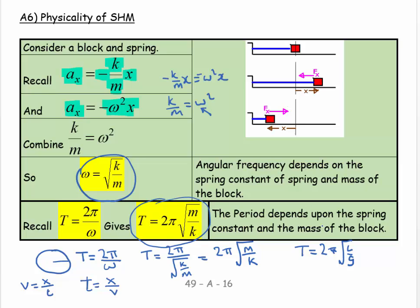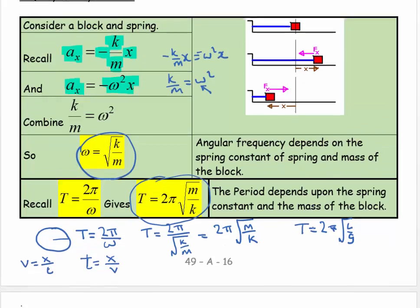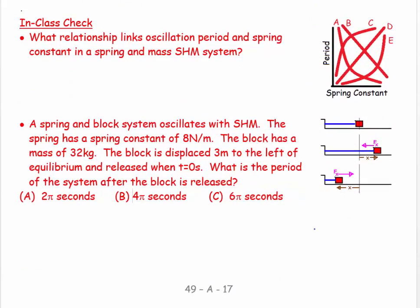Let's look at some questions. What relationship links oscillation period—that's going to be T—and spring constant—that's going to be k—in a spring mass system? Notice there are no letters indicating that k is the spring constant—you've got to walk in with that knowledge. I know that T equals 2π square root of, do you remember it?